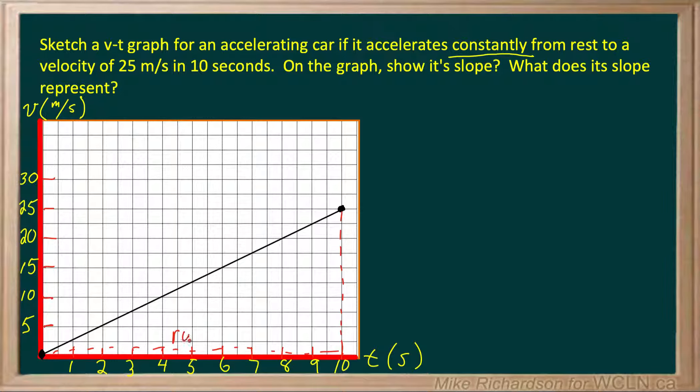So when I calculate them, my run goes from zero to ten. So my run is ten seconds. Make sure you include the units. And my rise goes from zero all the way up to 25 meters per second. So my rise is 25 meters per second.